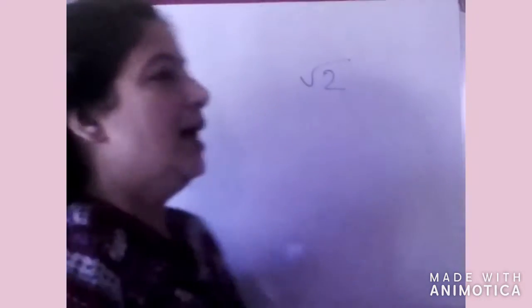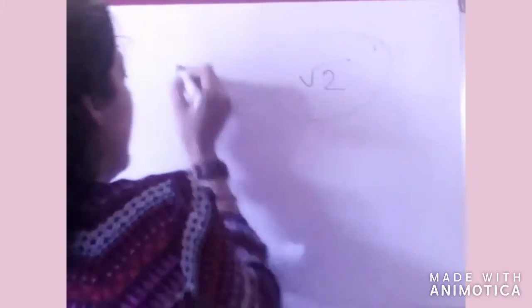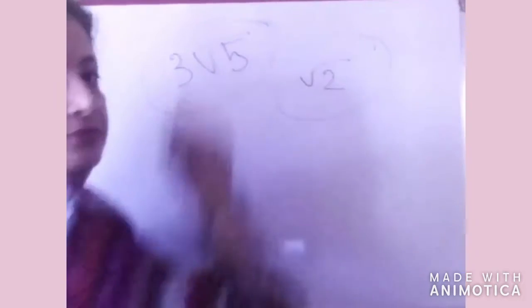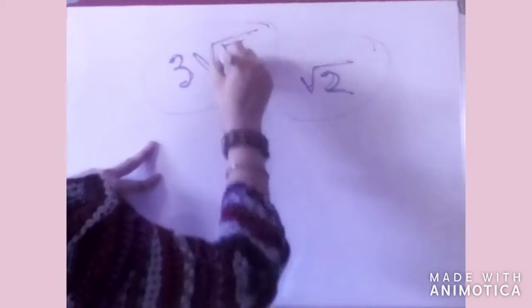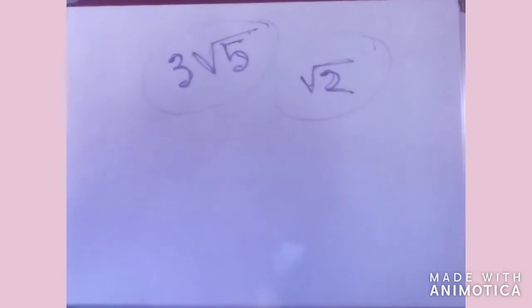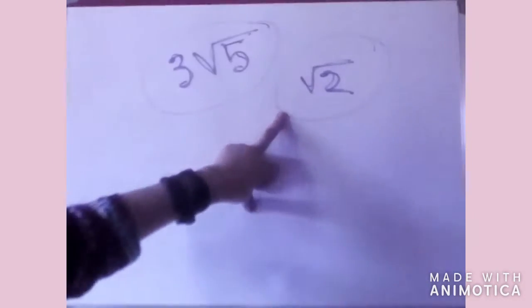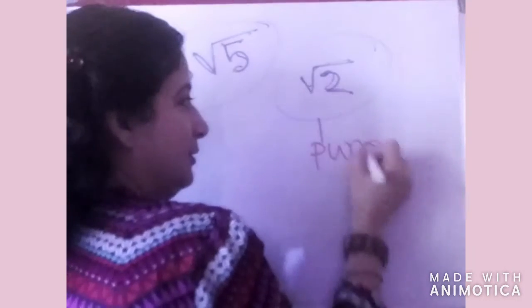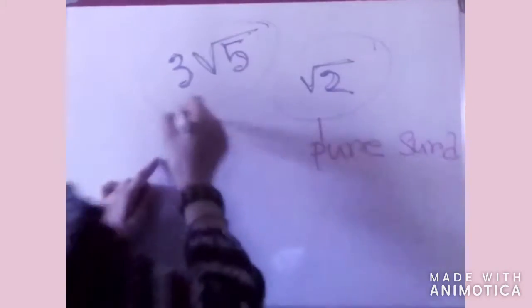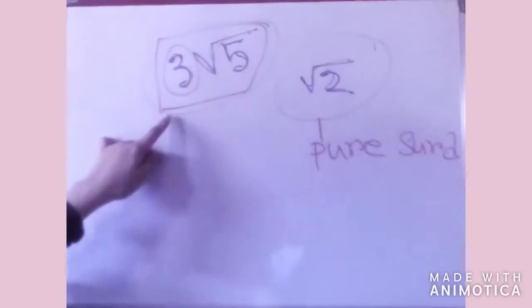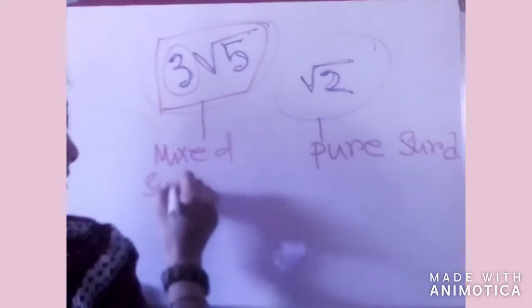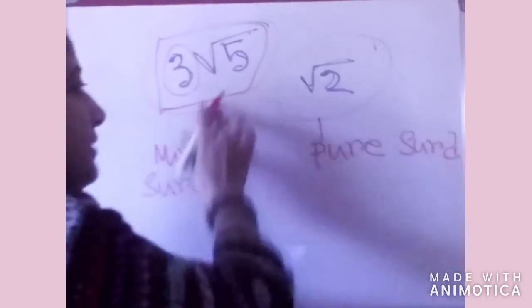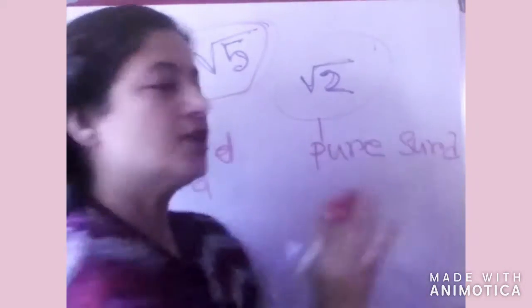In the case of surds, we will discuss how to do multiplication, addition, and all these operations. But first, I want to say that a surd may have two forms. Root 2 is a surd, and 3 root 5 is also a surd. But the difference between these two is that root 2 is called a pure surd, while in 3 root 5, one part is rational and the other part is irrational, so this is called a mixed surd.